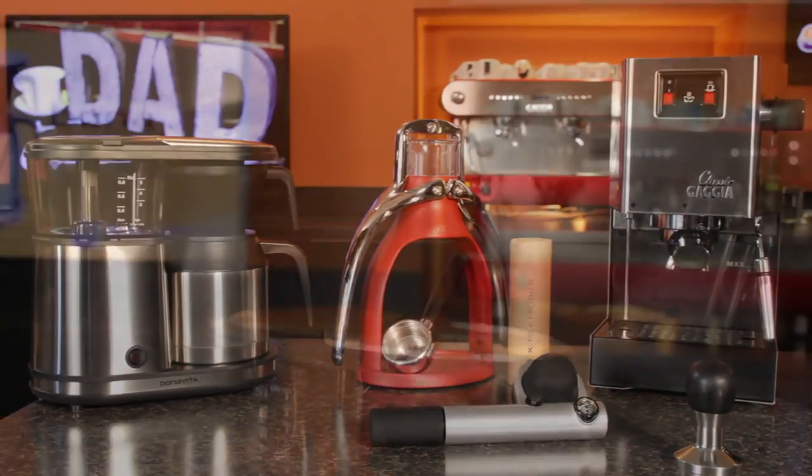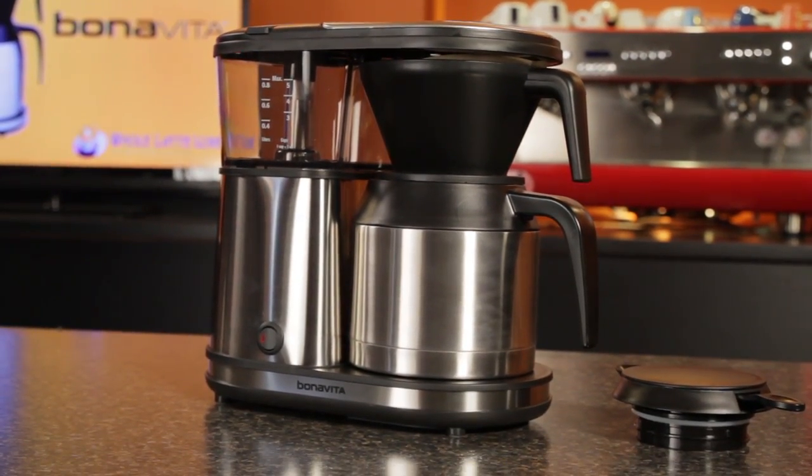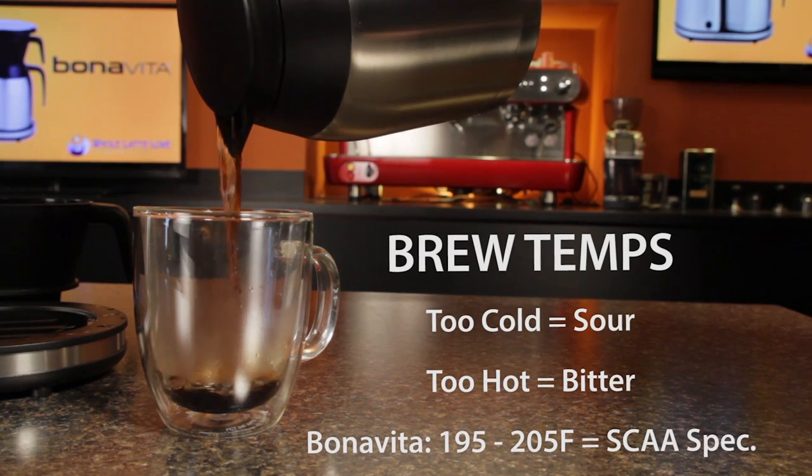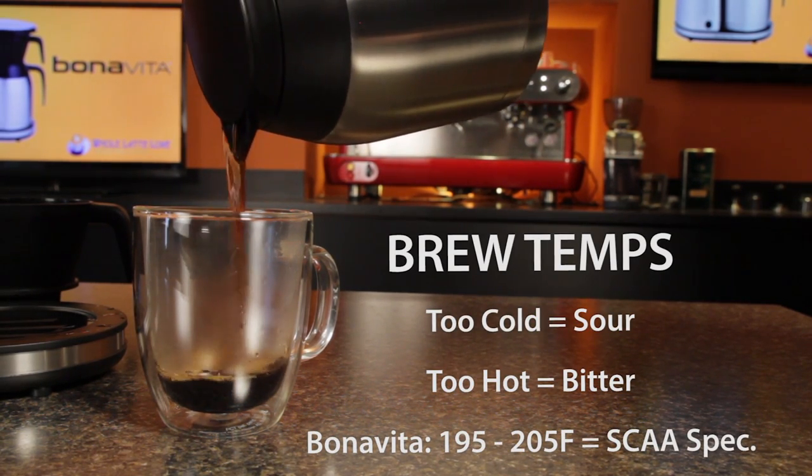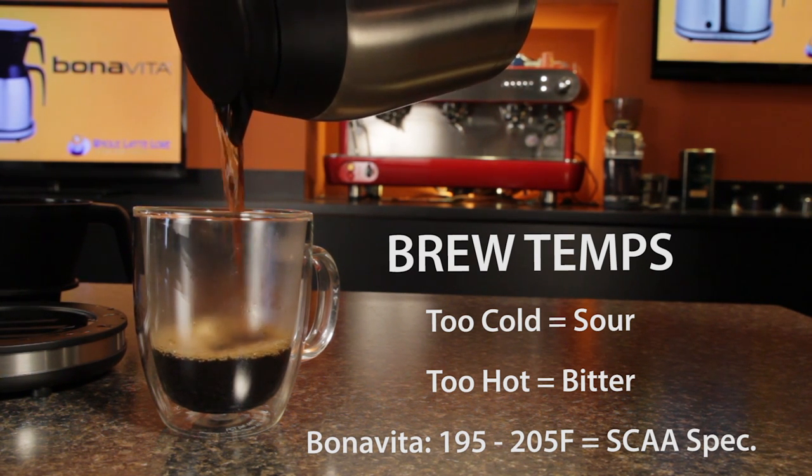First off we've got the Bonavita 5 cup carafe brewer. This is not your average drip coffee maker. Brewing at the right temperature makes a big difference in flavor. If it's too cold coffee is sour and too hot it comes out bitter. The Bonavita 5 cup gets temperature just right.